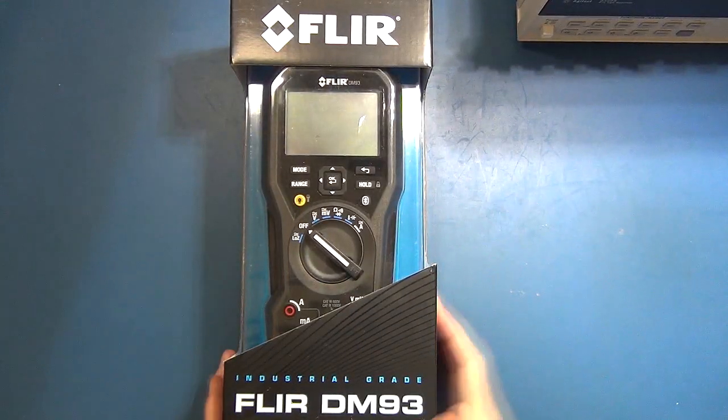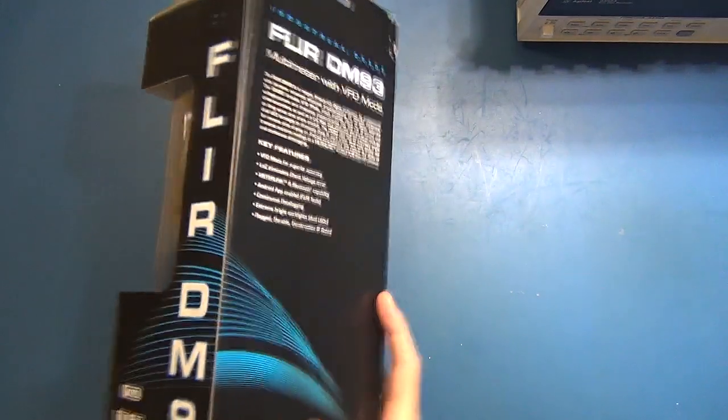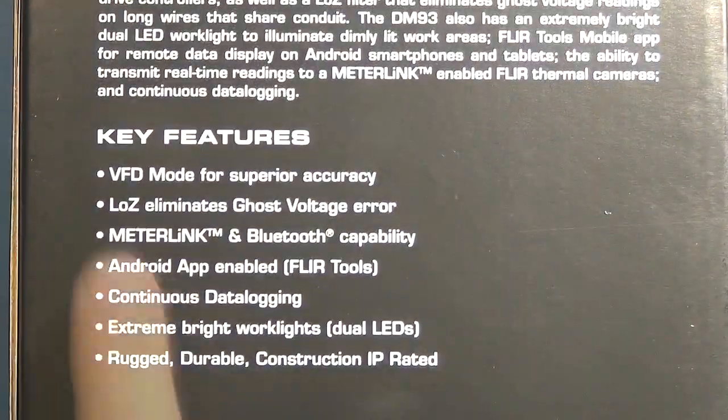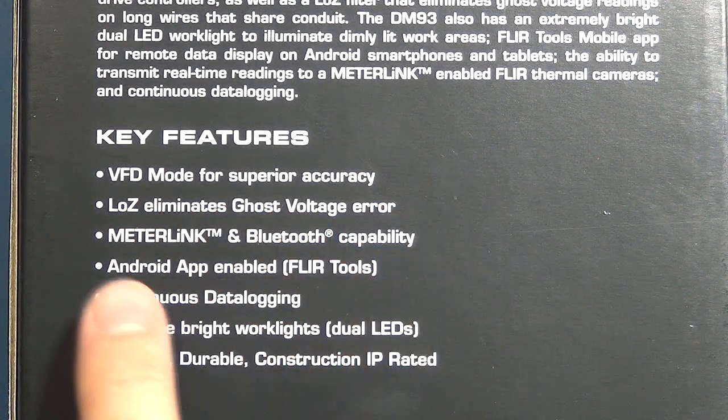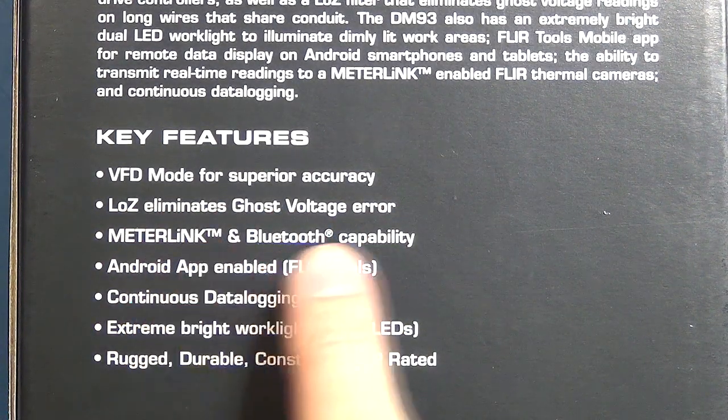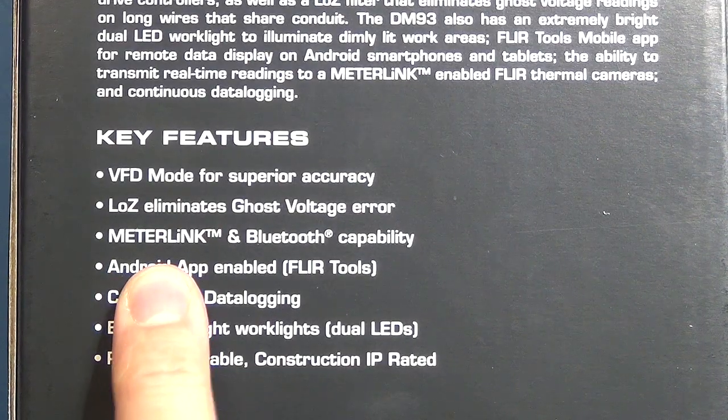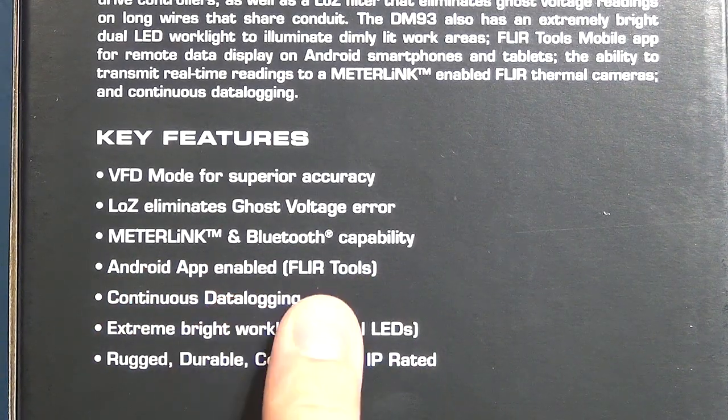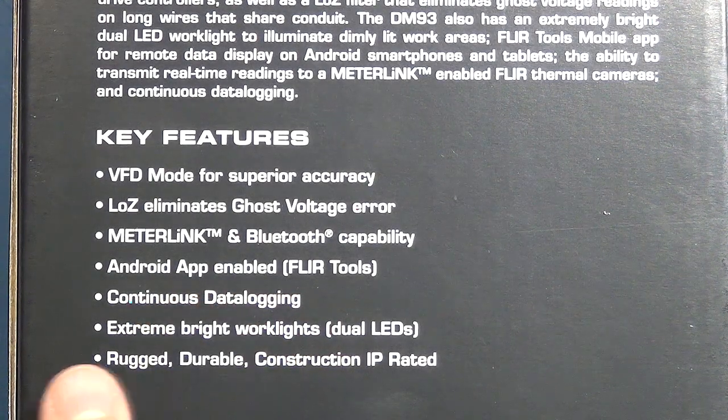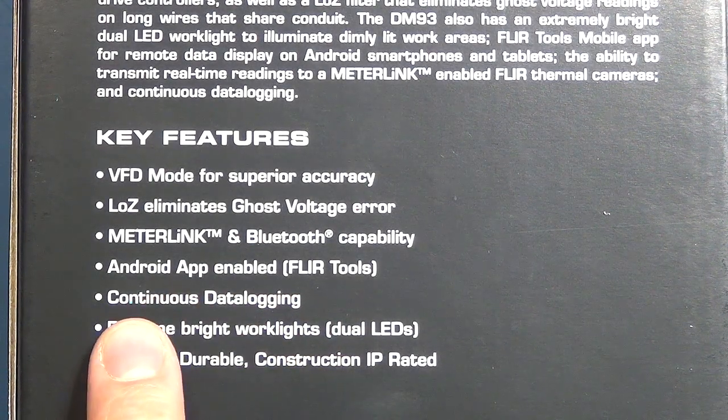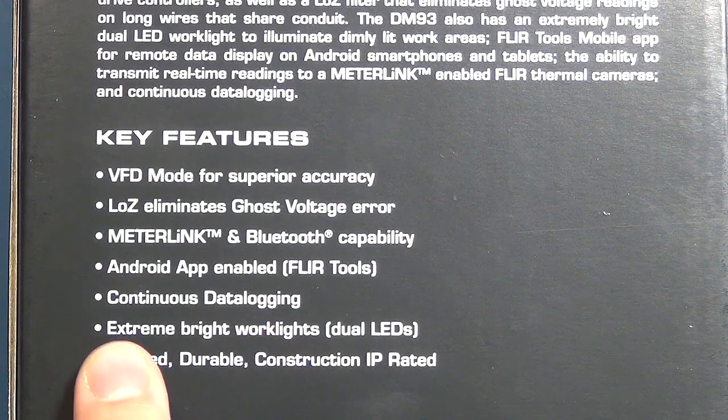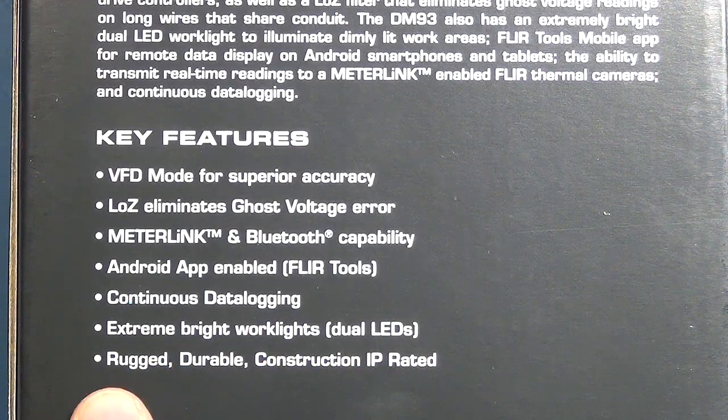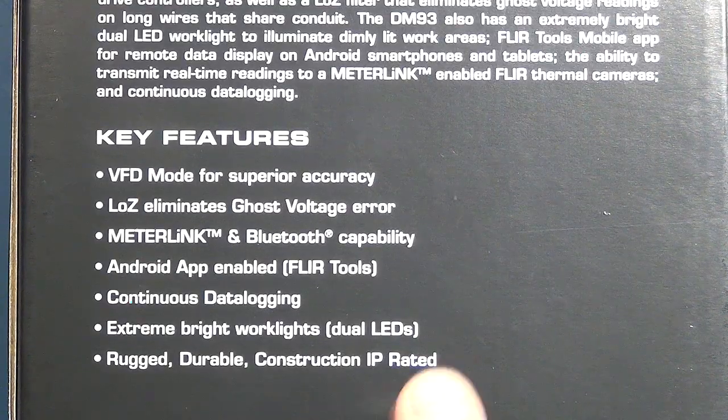Here it is. Here is the retail packaging. On the back of the box, just look at the bullet points of what it can do. It says it's got a VFD mode for superior accuracy, low impedance eliminates ghost voltage error, master link and Bluetooth capability, Android app enabled. Another interesting feature I have not seen on a meter before: continuous data logging, extreme bright work light with dual LEDs. We'll see what that's all about. Rugged durable construction, IP rated.